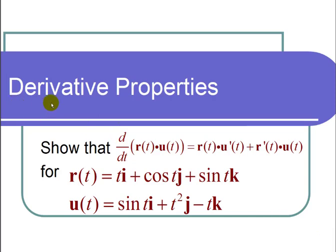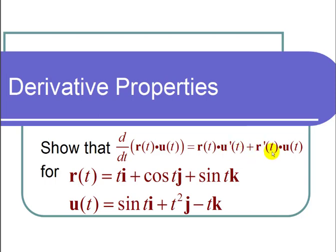This is a video on derivative properties. The question states: show that d over dt of r of t dot u of t is equal to r of t dot u prime of t plus r prime of t dot u of t.